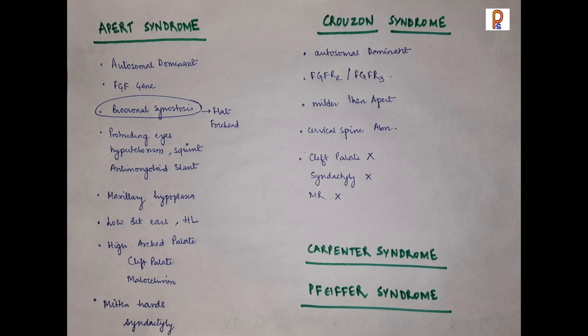Apert syndrome is an autosomal dominant syndrome that affects fibroblast growth factor receptor genes. We get bicoronal synostosis and a flat forehead. Looking at the dysmorphic features: there will be hypertelorism, protruding eyes, squint, anti-mongoloid slant, hypoplastic maxilla, low-set ears, palate deformity including high-arched or cleft palate, malocclusion of teeth, and mitten hands — that is, syndactyly. These are the presentations of Apert syndrome.